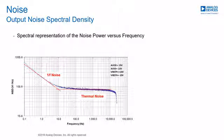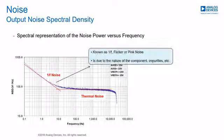The output noise spectral density is the noise energy with respect to frequency. The noise spectral density is made up of two noise sources: 1/f noise and thermal noise. 1/f noise is also known as flicker noise or pink noise. It is due to the nature of the components and impurities of the process. There is no general equation to define this noise.